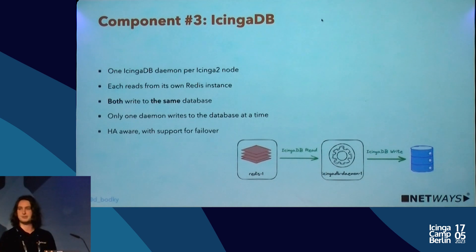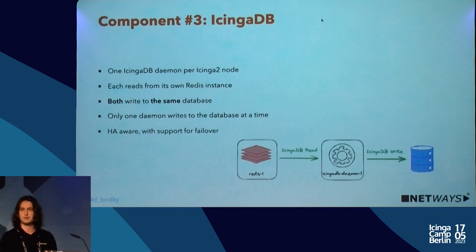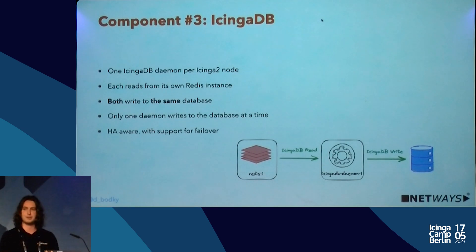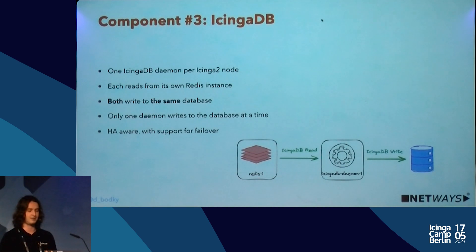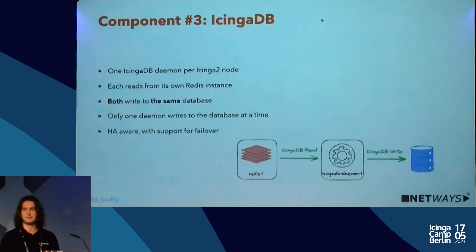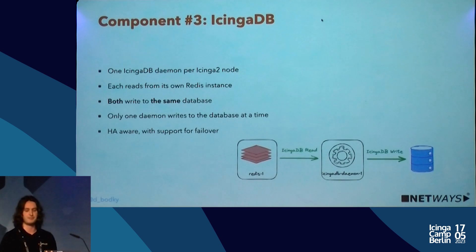Component three is Icinga DB, which features failover, so it's highly available out of the box. Each instance reads from its own Redis instance — that's where the negotiation for failover happens as well. Both write to the same database, but because one is always the passive part, only one daemon is writing to the database at a time. This component is quite straightforward.